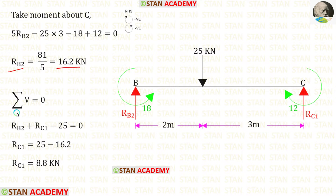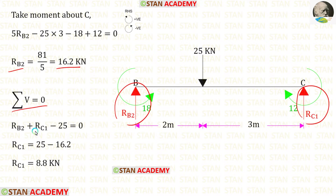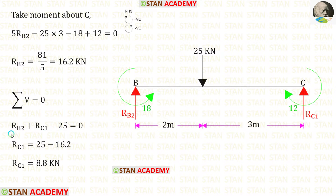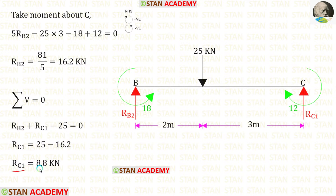Now let us apply the rule sigma V equals 0. RB2 and RC1 are acting upwards, so both are positive. The 25 kN load is acting downwards, so that is negative. Substituting RB2 as 16.2, we finally get RC1 as 8.8 kN.